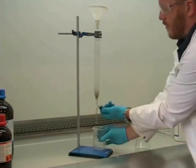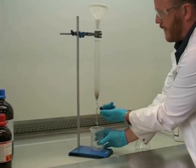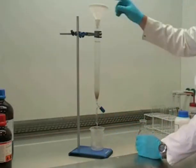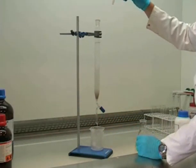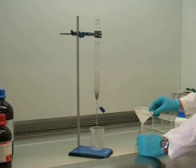Should the level of the eluent get close to the top of the column, then some of it should be removed by opening the tap. We can run this into the beaker, which will then assist us in making a slurry with the remaining silica.